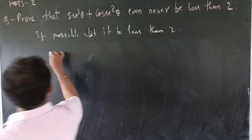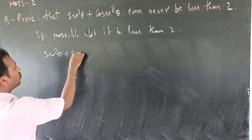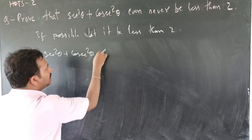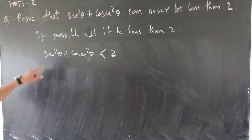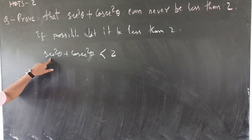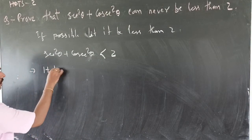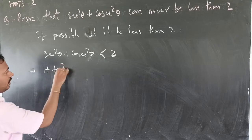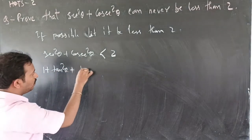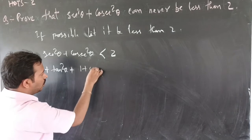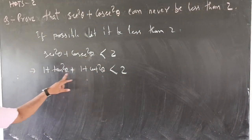That means we can write: sec squared theta plus cosec squared theta is less than 2. Now, sec squared theta can be written as 1 plus tan squared theta, and cosec squared theta can be written as 1 plus cot squared theta.